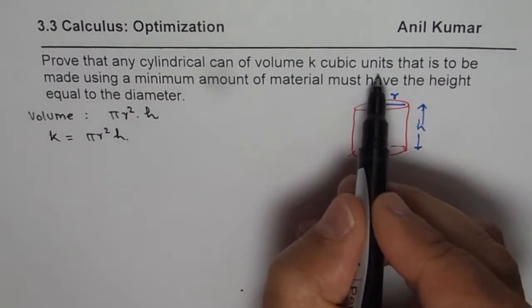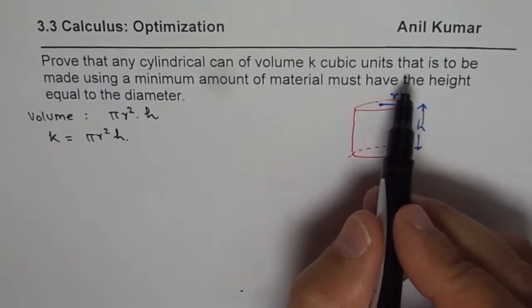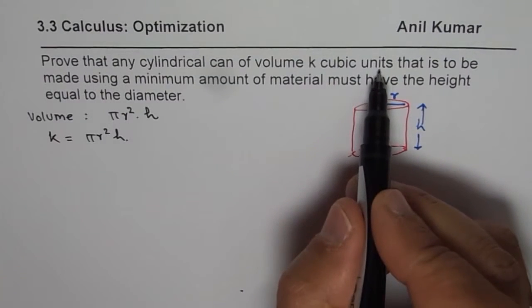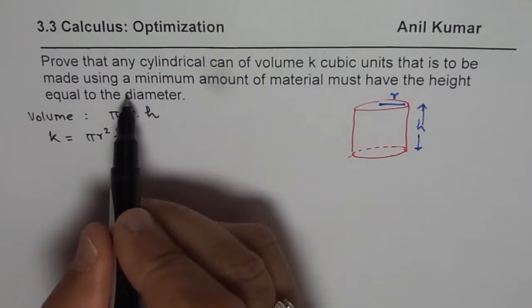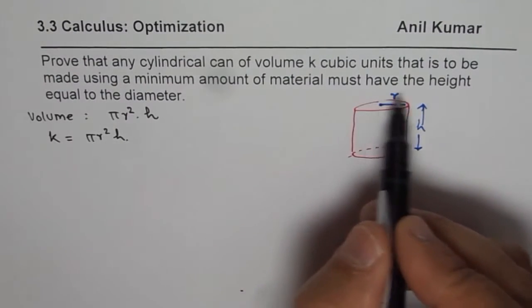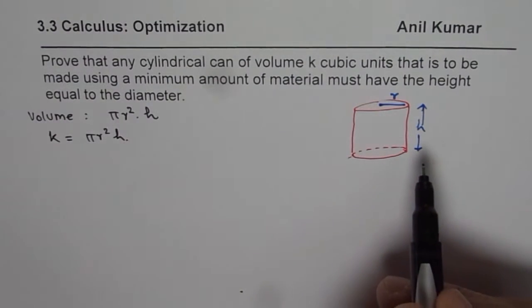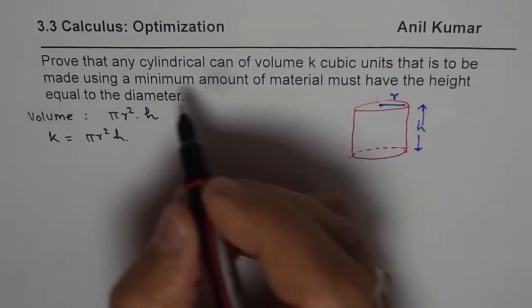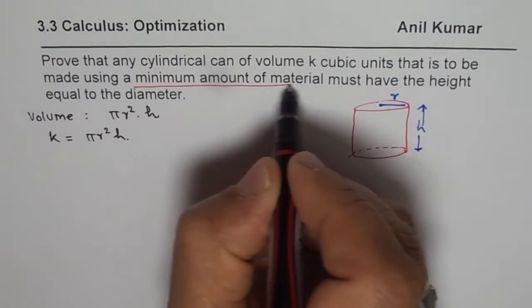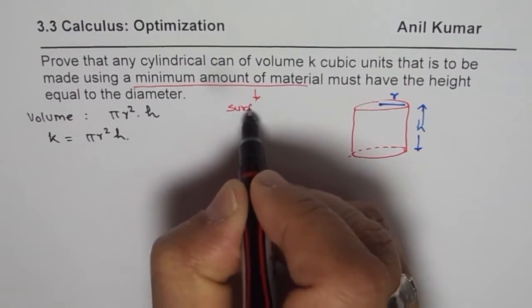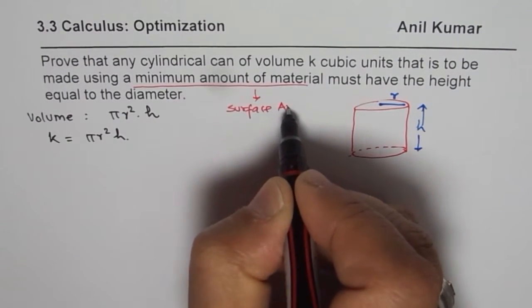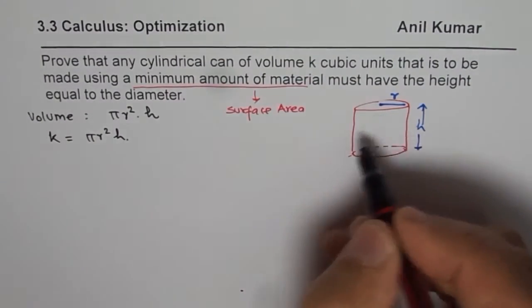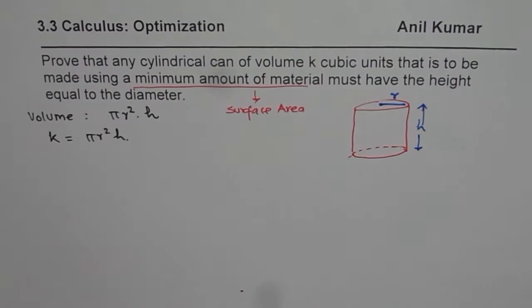That is the volume given to us. We need to prove that any cylindrical can of volume k, made using the minimum amount of material, must have height equal to diameter. The condition is minimum material, which means we need to minimize the surface area to minimize the cost of material.